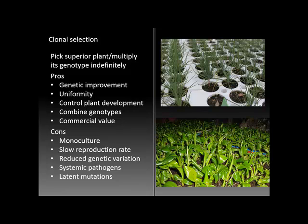There are both strong pros and significant cons to this approach. One of the foremost advantages is that the genetics can be improved to meet the specifications of the grower or the purchaser. A high degree of uniformity can be achieved both in the appearance of plants and in their size, growth speed, and timing of producing flowers, fruit, or seeds.